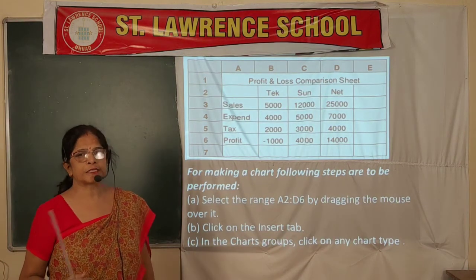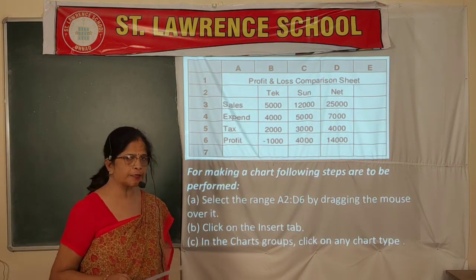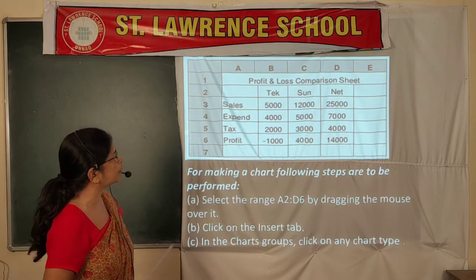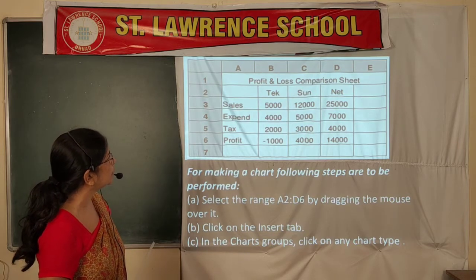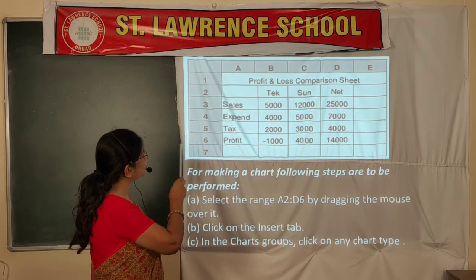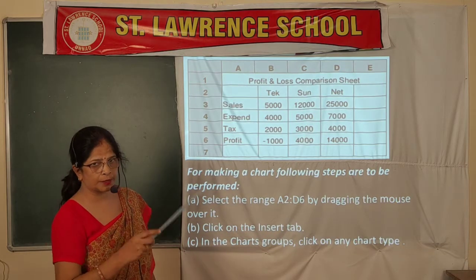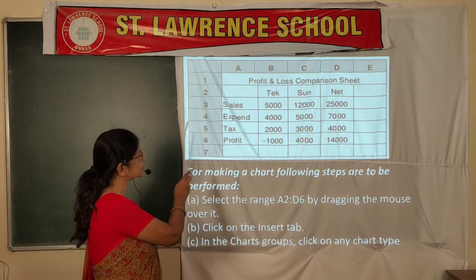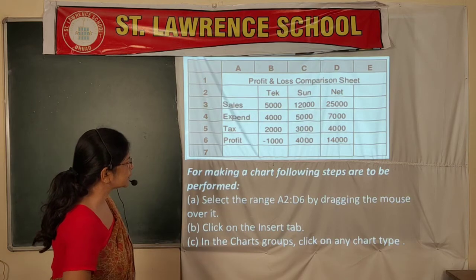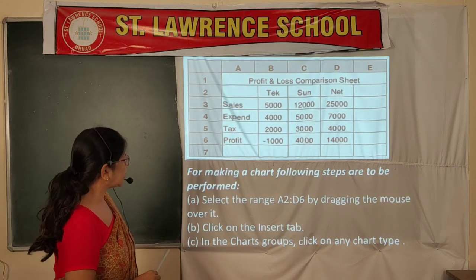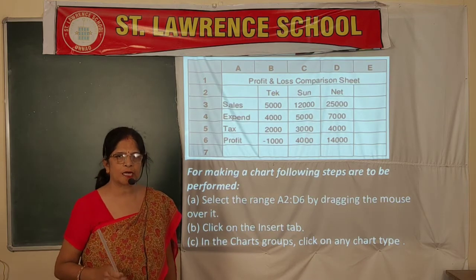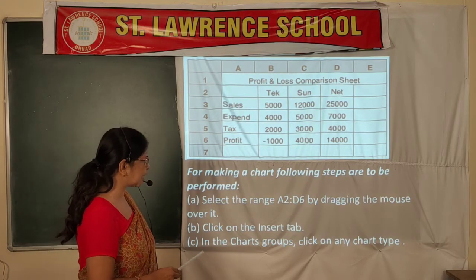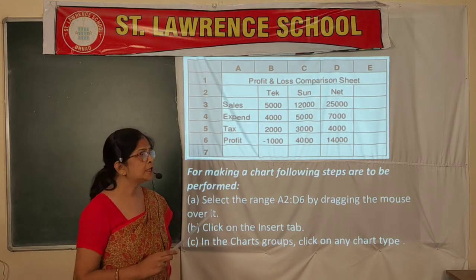Now, how to make a chart. First, create a table on an Excel sheet. Suppose you have a table called Profit and Loss Comparison Sheet from cell A1 to D6. To make a chart, select the range A2 to D6 by dragging the mouse over it. Then click on the Insert tab, where you will find the chart option in the Charts group, and click on any chart type.